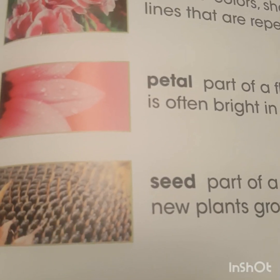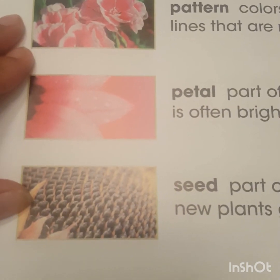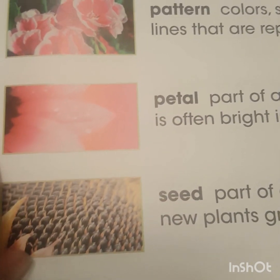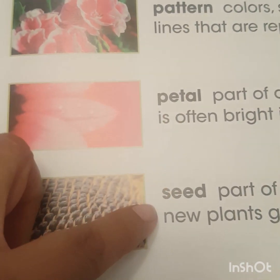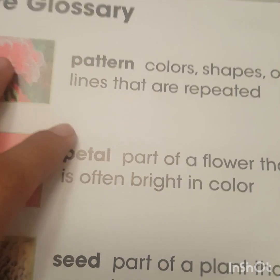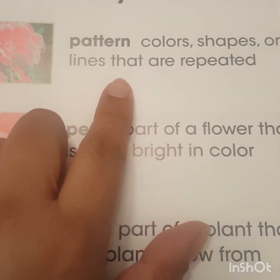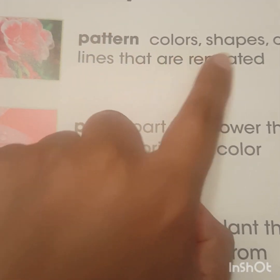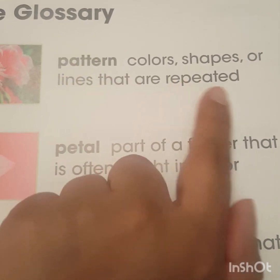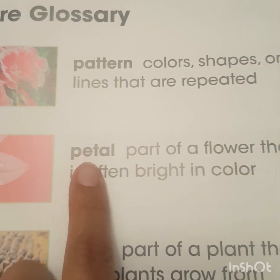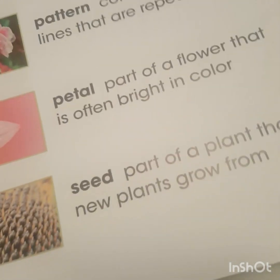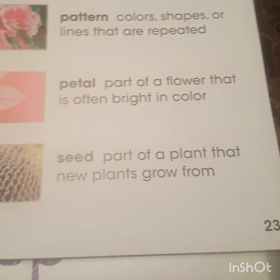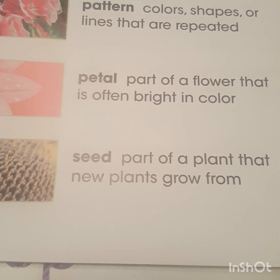Do you remember how I mentioned the glossary? Well, here is our picture glossary at the end of the book, and all those bolded words that we read are here. For example, "pattern" — and it goes on to help us understand what that word means: colors, shapes, or lines that are repeated. "Petal" — part of a flower that is often bright in color. And "seed" — part of a plant that new plants grow from.